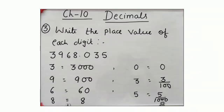0 is at tenths place, so the place value of 0 is 0 by 10 or 0. And 3 is at hundredths place, so the place value of 3 will be 3 by 100. And 5 is at thousandths place, so the place value of 5 is 5 by 1000.